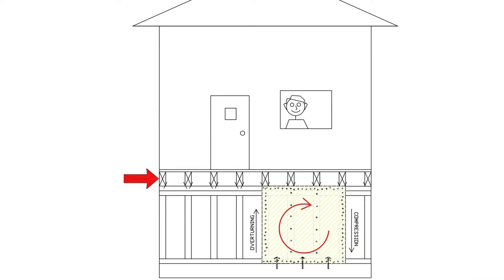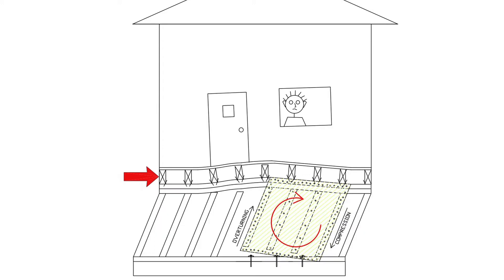In very simple terms, as the earthquake force pushes against the floor of the house, the shear wall that is attached to that floor will want to overturn, as shown by the red arrow. If the shear wall starts to overturn, you can see at the bottom of the shear wall it is being lifted up off the foundation, and as it begins to fail, the cripple wall studs begin to lean.